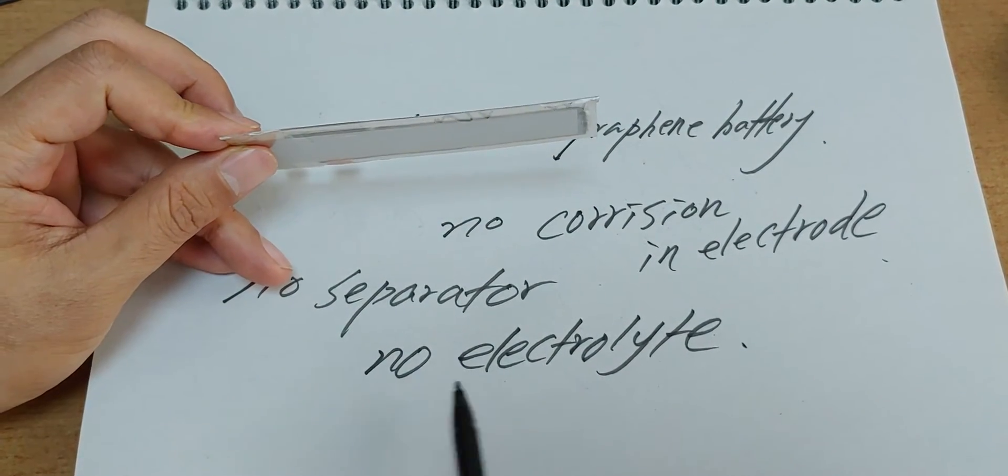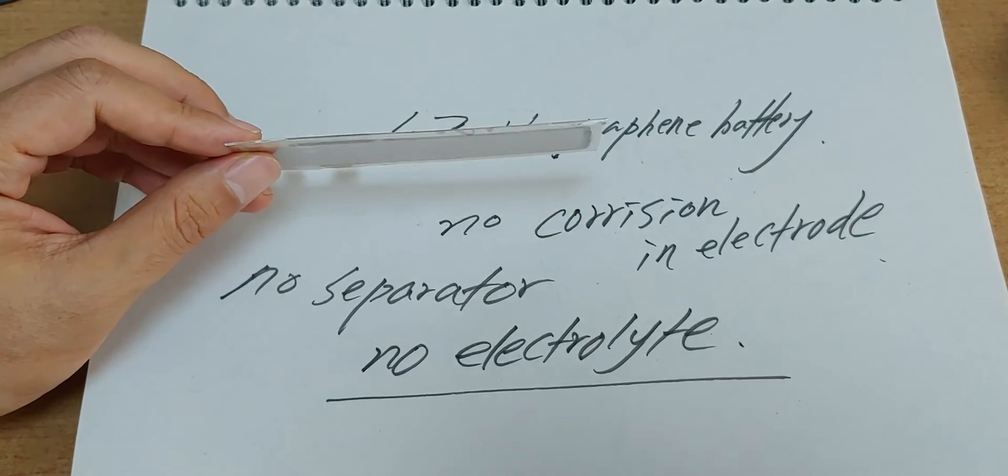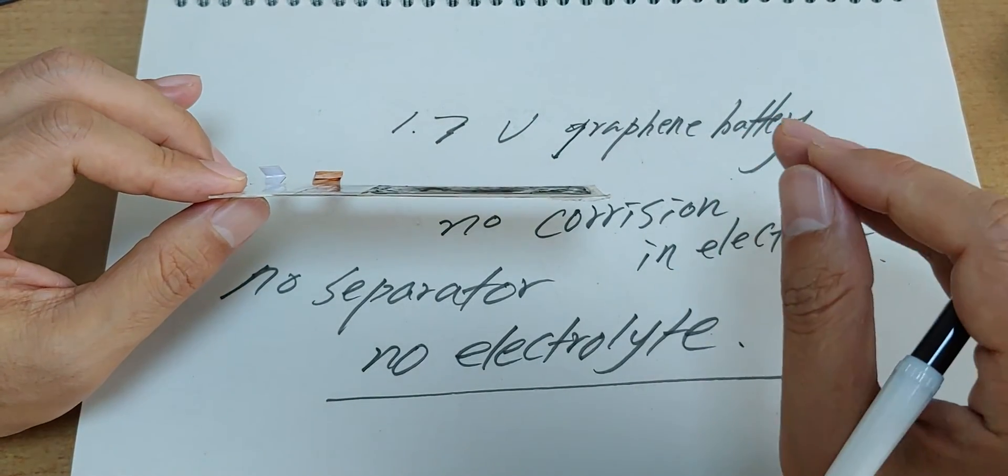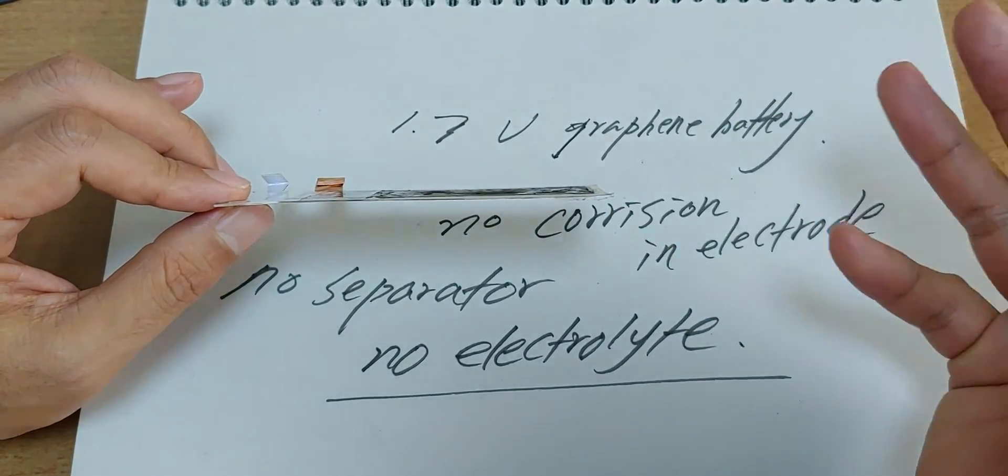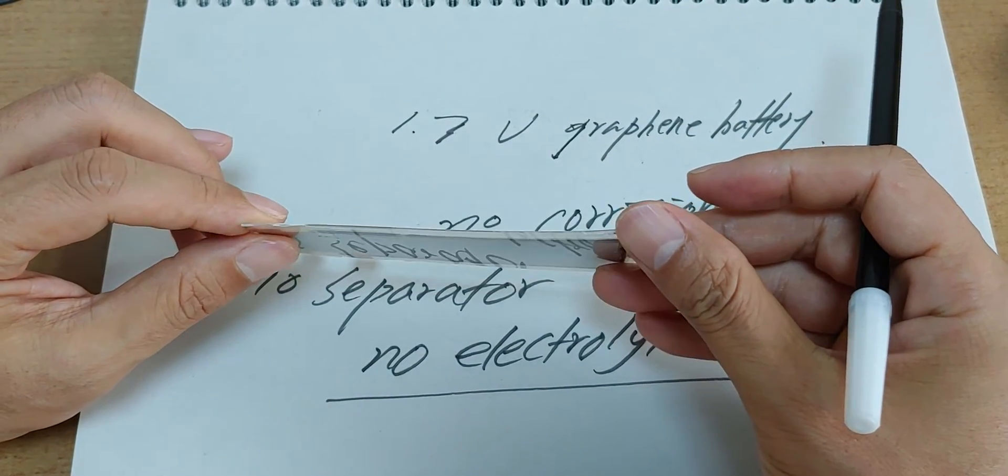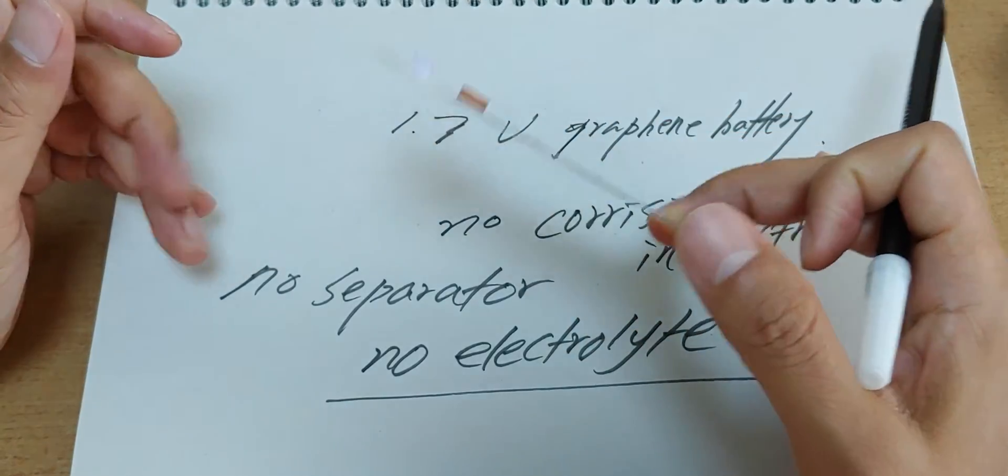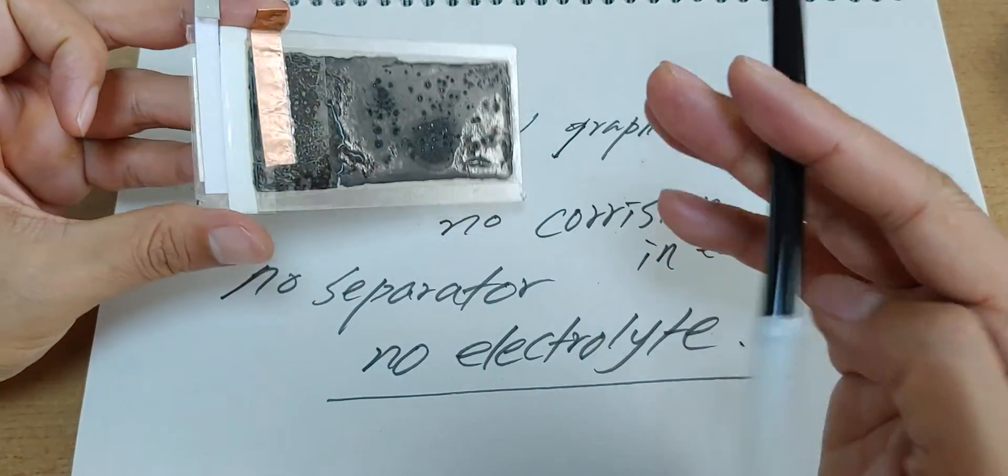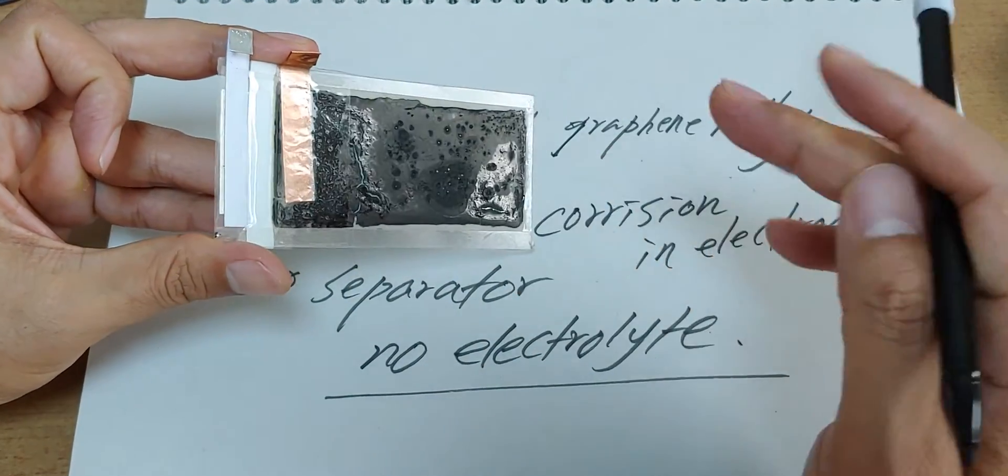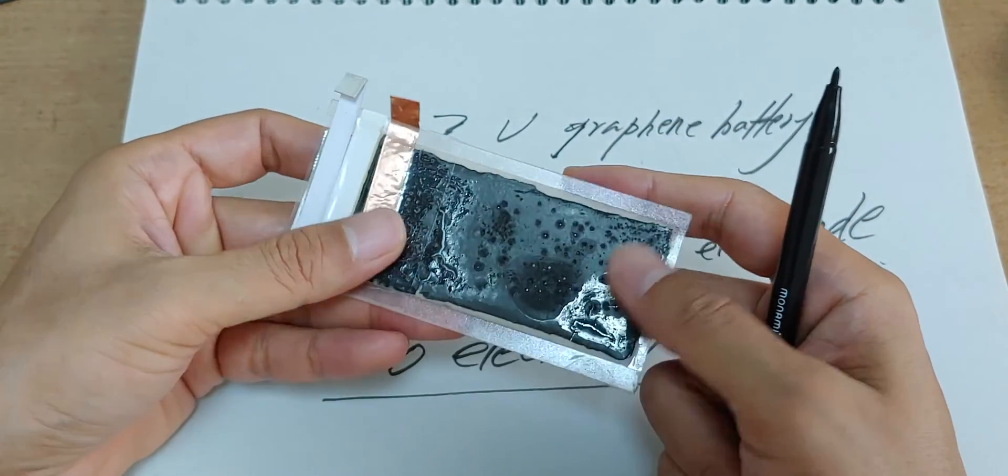Of course, I grant that this can be a problem because there is a little bit of moisture in the air. By the way, in this battery, there is no electrolyte. That's the point. Perfectly dry.